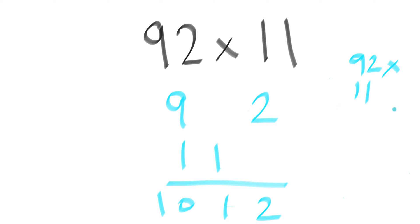92 times 11 gives you 92, 92, 2, 11, 9 plus 1, 10. Yeah, same answer. So this is working. This formula is definitely working.